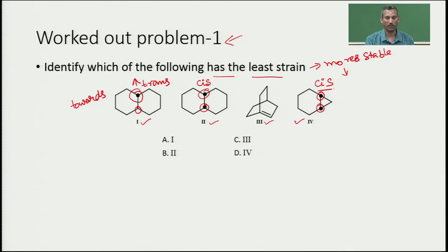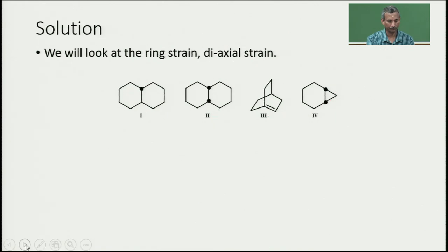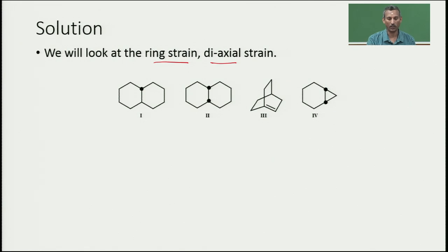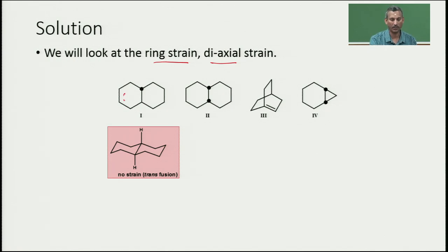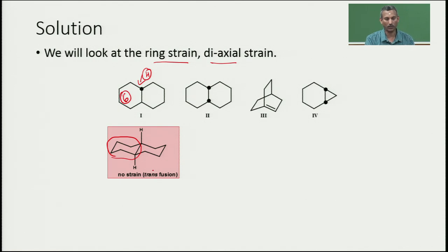Before solving the problem, we need to draw the ring strain present in each cyclic structure. We can draw these structures as cyclohexane chair conformations since all are six-carbon units. For the first structure, one hydrogen is pointing towards the observer and another away — this is the trans-fused cyclohexane. Both hydrogens are far apart, so there is no ring strain.